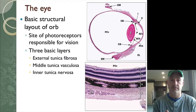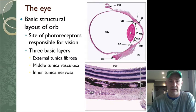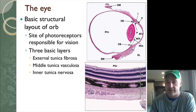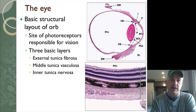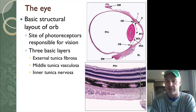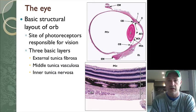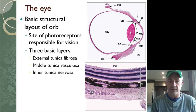Today we're going to talk a little bit about the eye and some of the histology of that. Probably the biggest thing is going to be the inner tunica nervosa — the different layers of the retina.